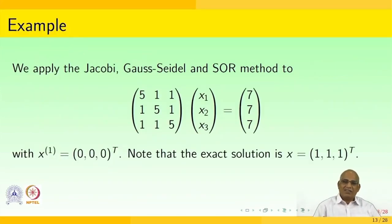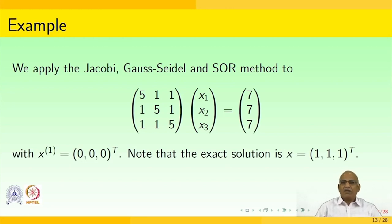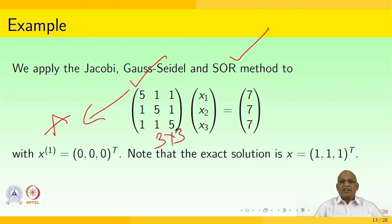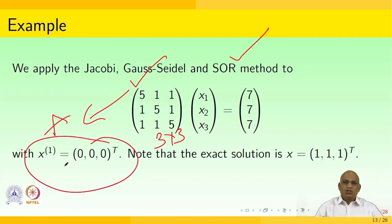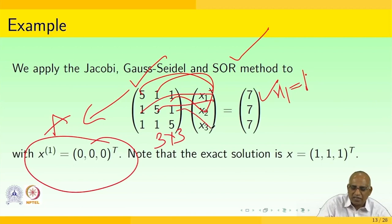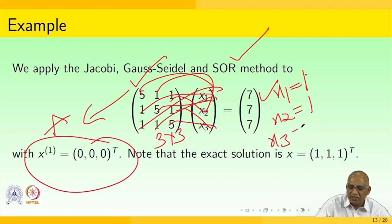Having covered the theory, let us look into a simple example solving by Jacobi, Gauss-Seidel, and successive over-relaxation methods. The coefficient matrix A is 3×3 and the starting vector is [0, 0, 0]. As you can see, the system is: 5x1 + x2 + x3 = 7, x1 + 5x2 + x3 = 7, x1 + x2 + 5x3 = 7. So x1 = x2 = x3 = 1, giving a true solution of [1, 1, 1].